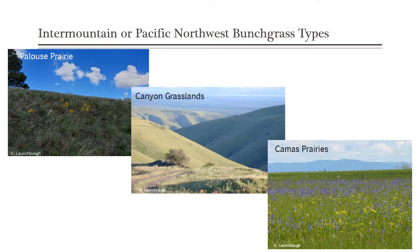I'm going to focus on a couple of bunchgrass types in the Pacific Northwest. First, the Palouse Prairie here in Idaho and Washington. Then the canyon grasslands along rivers through the Intermountain area, such as the Snake River — this picture is right above Lewiston going into the Snake River. And then there's the Camas Prairie — several high-mountain Camas Prairies in Idaho that are higher elevation, quite moist grasslands, and also a bunchgrass type within the Intermountain region.